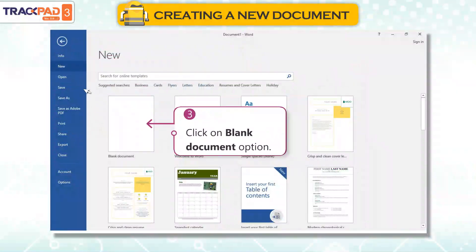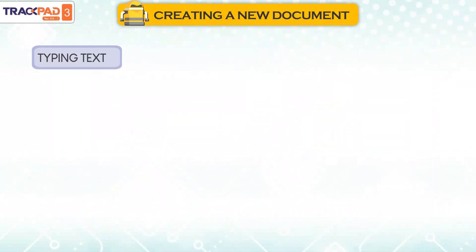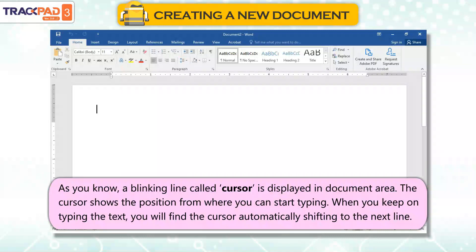Third, click on Blank Document option. As you know, a blinking line called Cursor is displayed in the Document Area.